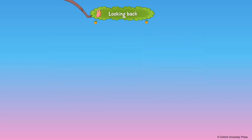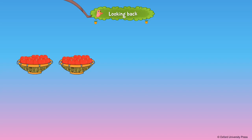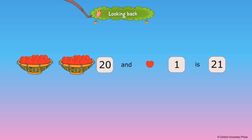Numbers from 21 to 50. Each basket has 10 apples. There are 20 apples in both the baskets together. If one more apple is added, we will have 21 apples. 20 and 1 is 21.